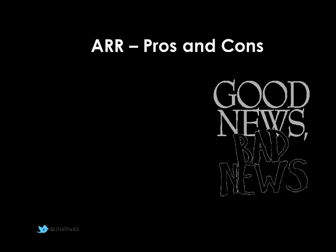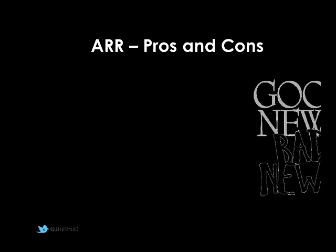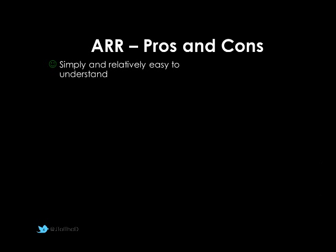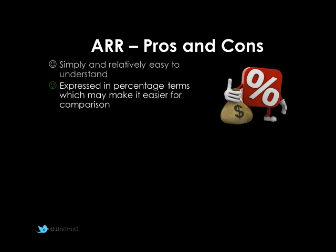So that seems quite straightforward. What are the pros and cons of the average rate of return method? Well, it's probably pretty simple to understand — we're looking at percentages, it's very comparable, and the equations themselves aren't that difficult. The end result is expressed in percentage terms, so even if we've got a large outlay with large returns, or a small outlay with small returns, we can compare two projects like for like. It's all about the percentage return rather than the total figures — it's about how well our money is working.